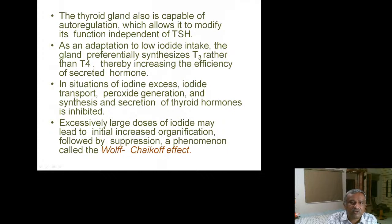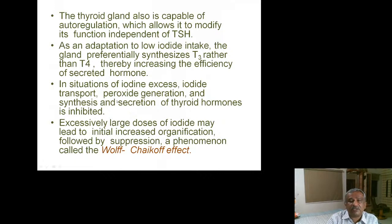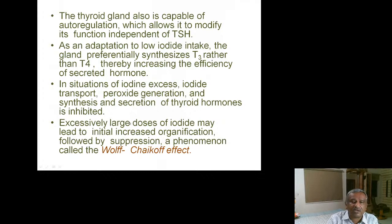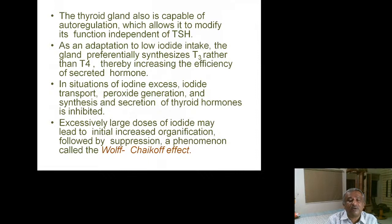In situations of iodine excess, iodide transport, peroxide generation, and synthesis and secretion of thyroid hormone are inhibited — this is called iodine constipation of the thyroid gland. Excessively large doses of iodine may lead to initial increased organification followed by suppression — this is called the Wolf-Chaikoff effect. If you give too much iodine, hormone synthesis gradually reduces and the patient may develop hypothyroidism.